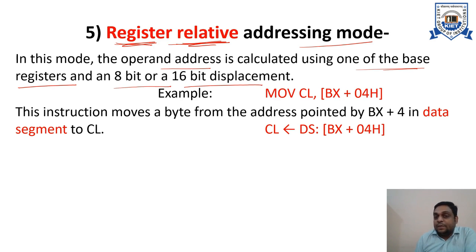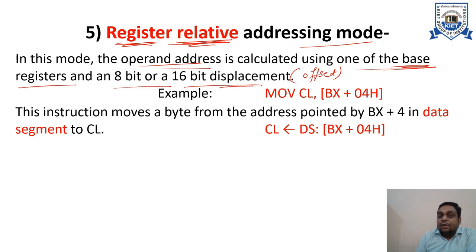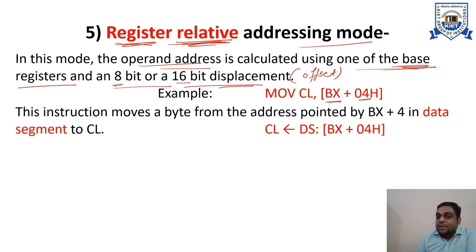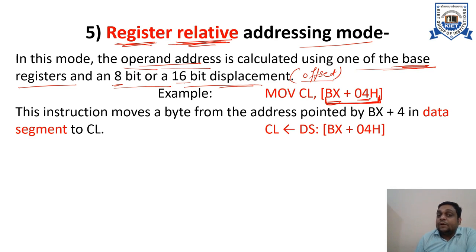The effective address is calculated using one of the base registers and an 8-bit or 16-bit displacement. Displacement means offset address. Here, relative means there is a relation between the base and displacement to get the effective address. BX is the base register, 04 is the displacement — either 8-bit or 16-bit. The displacement is an offset or address within the block. By adding these two, the content of the base register together with the displacement gives you the address of the operand — the effective address.